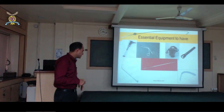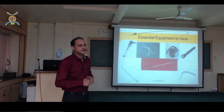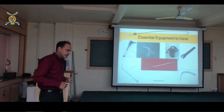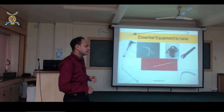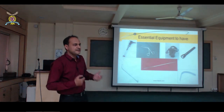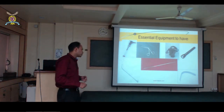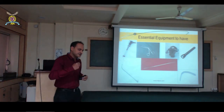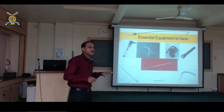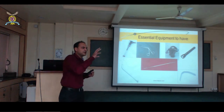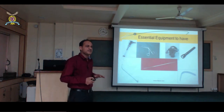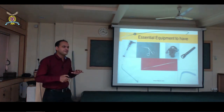A Eustachian tube catheter is very important for removing nasal foreign bodies — it makes removal extremely easy with very little chance of pushing the foreign body further. Also useful is a probe to clean ear discharge, and a tongue depressor to examine the entire oral cavity, including the gingiva and buccal mucosa.